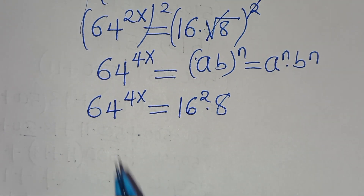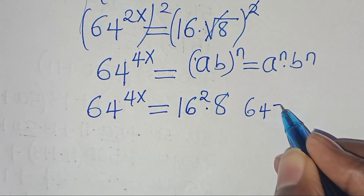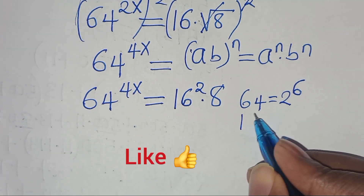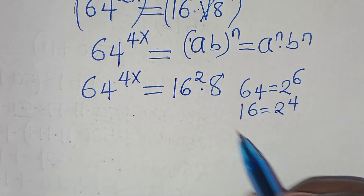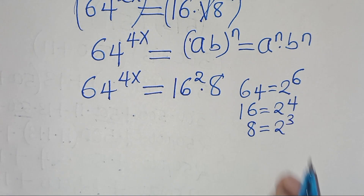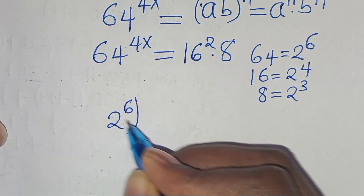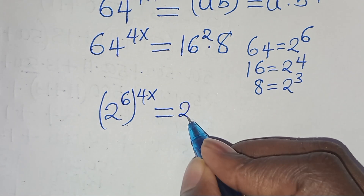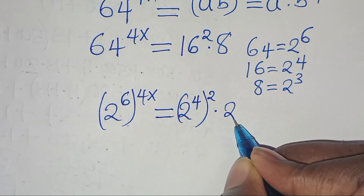Now, we can express 64 as 2 to the power of 6, and we can express 16 as 2 to the power of 4, and 8 is the same thing as 2 to the power of 3. So this implies that here we have 2 to the power of 6, raised to the power of 4x, this is equal to 2 to the power of 4, raised to the power of 2, then multiplied by 2 to the power of 3.